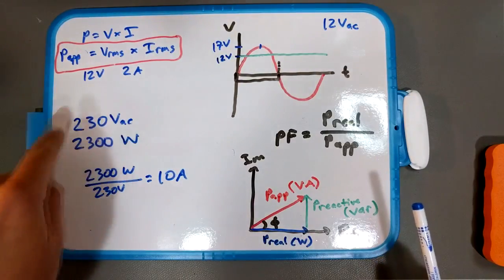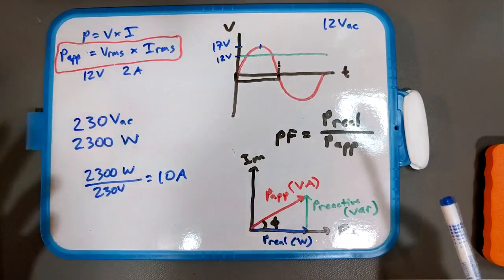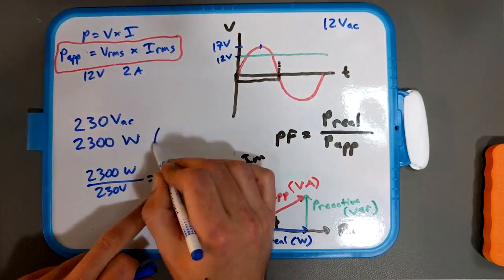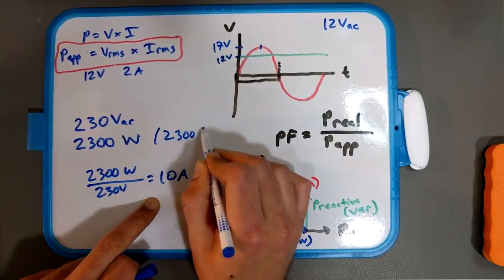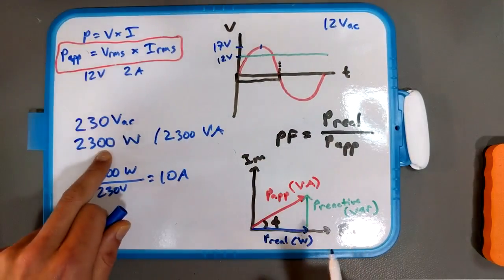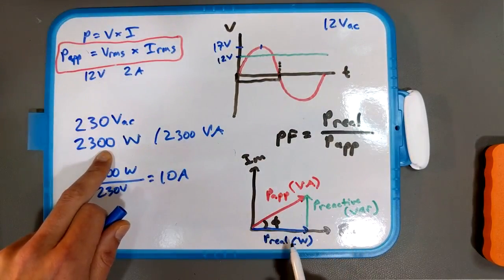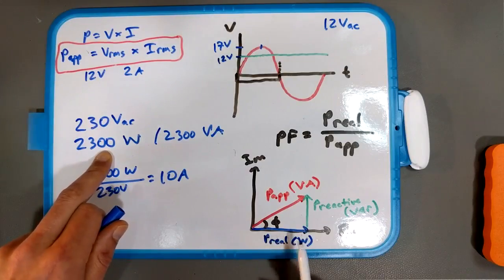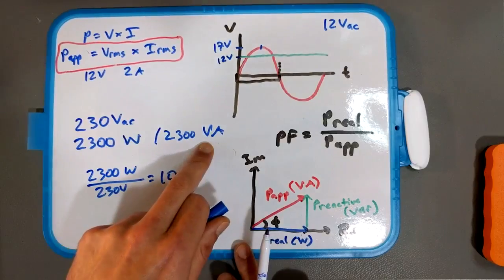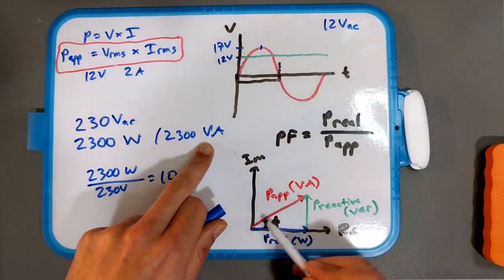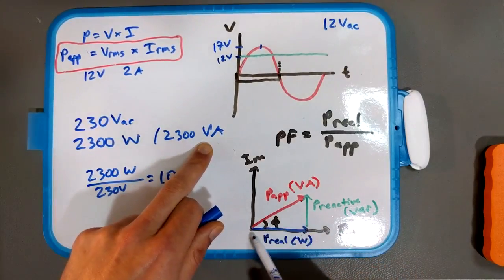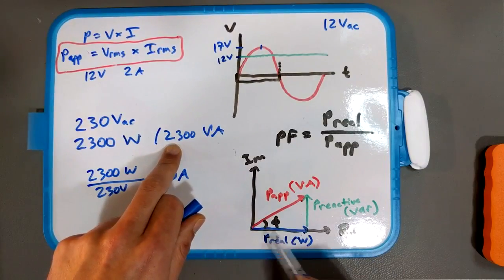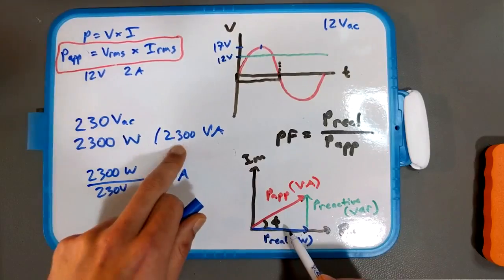But when you're looking at like nameplates to machines and stuff, it gets a little complicated, because it depends on do you see 2300 watts or do you see 2300 VA. If you see watts, that's referring to the real power, the power that you are actually being billed for, the power that your gizmo is consuming to do work. If you see 2300 VA, then that's this apparent power here. And the actual real power that your gizmo is using to do work is going to be less than 2300.